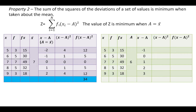The squares of the deviation will be 1, 0, 1, 4, and 9. And the product of frequency and square of deviations will be 3, 0, 7, 20, and 27. So when we take the sum of squares, the sum of squares of deviation will be 57.